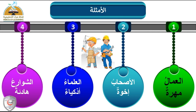المثال الثالث: العلماء أذكياء. العلماء جمع تكسير مفردها عالم، ويُعامل معاملة المفرد، فيُرفع بالضمة. إذن العلماء مبتدأ مرفوع وعلامة رفعه الضمة. وأذكياء هي التي أكملت معنى الجملة، فهي خبر مرفوع وعلامة رفعه الضمة، لأن جمع التكسير يُرفع بالضمة مثل المفرد.